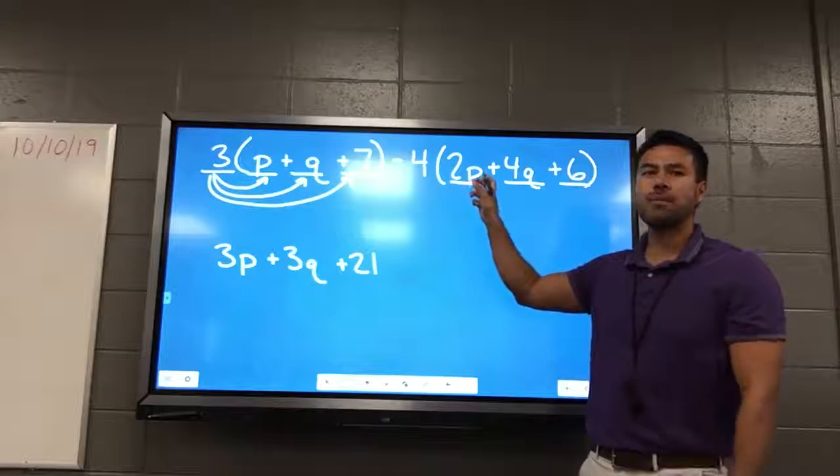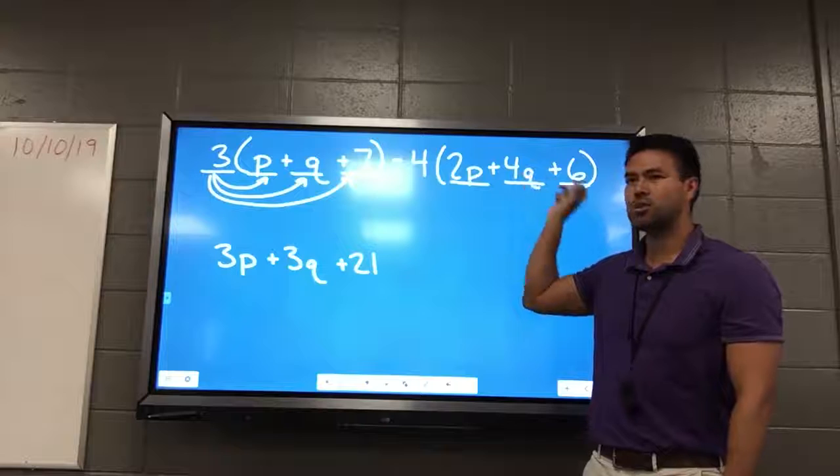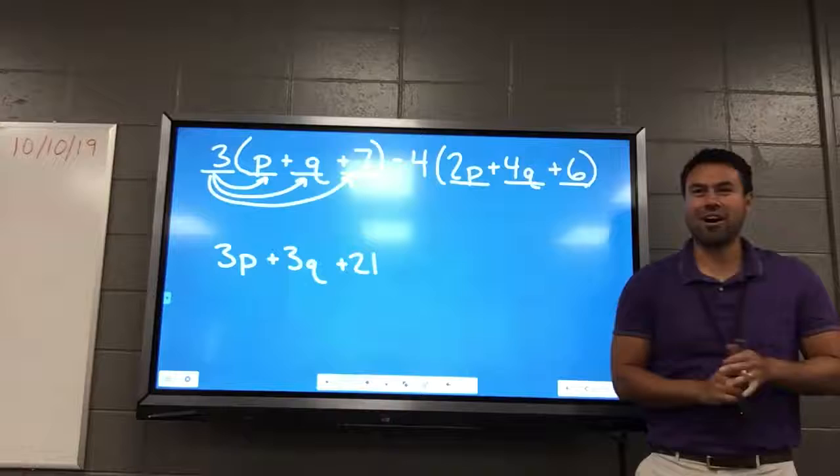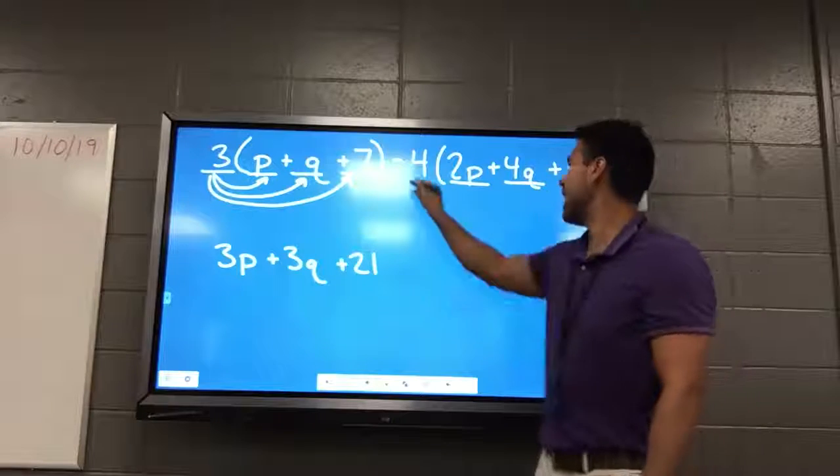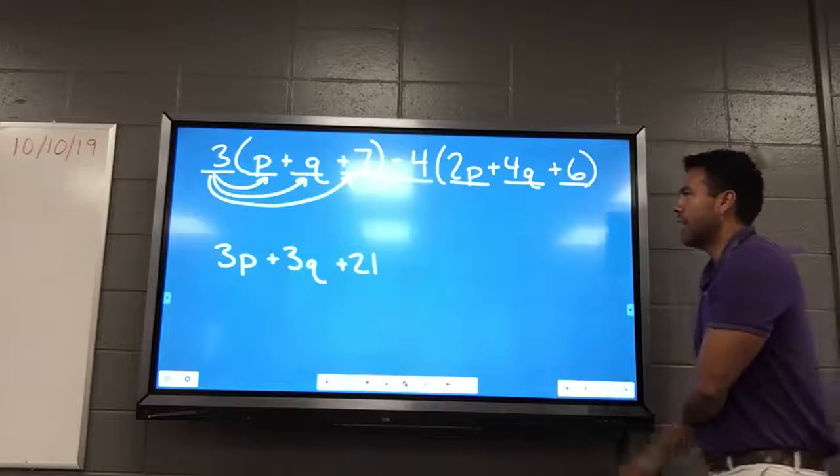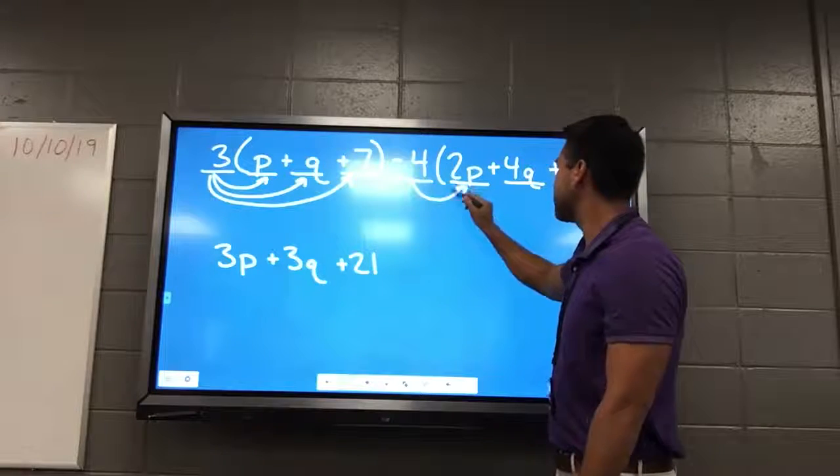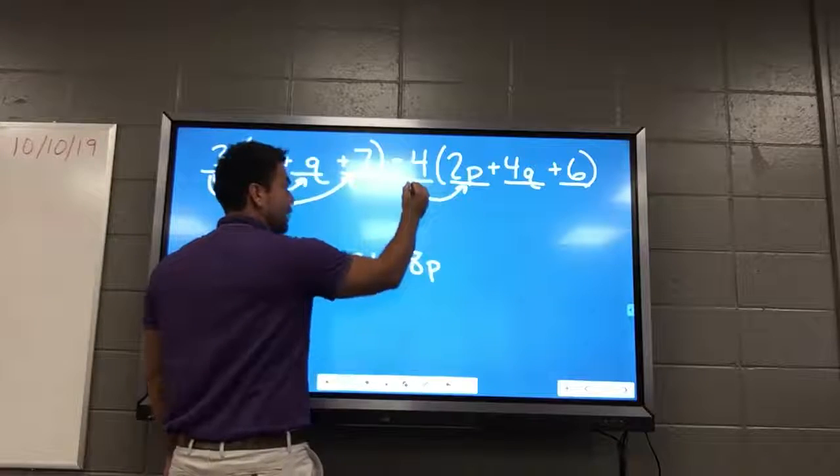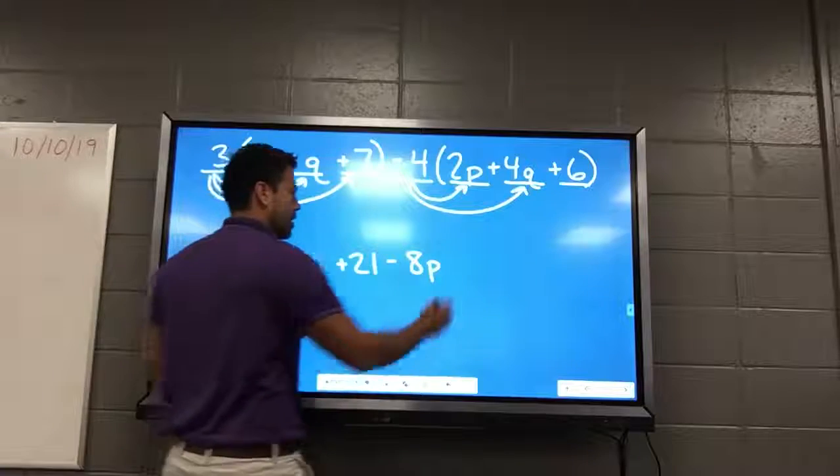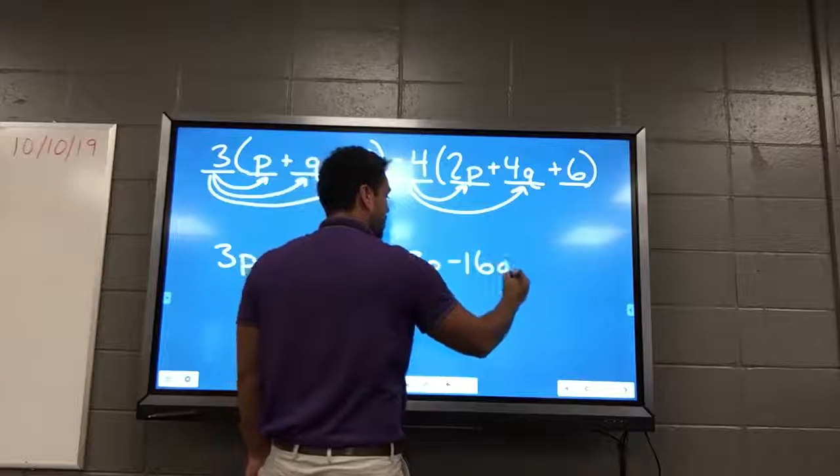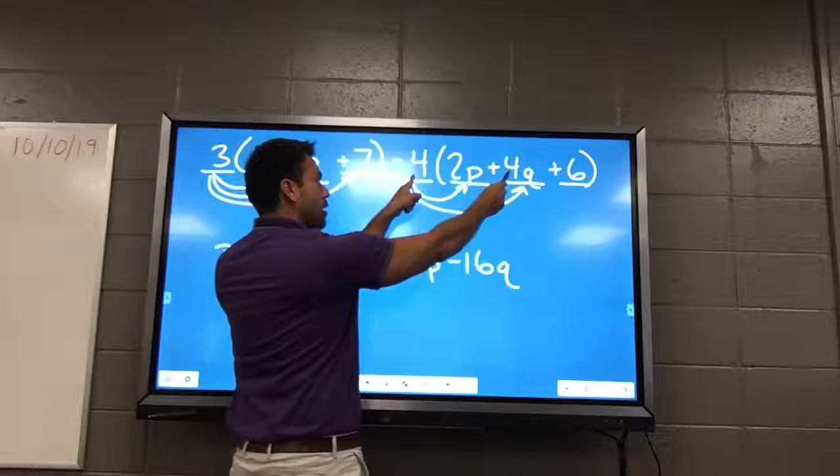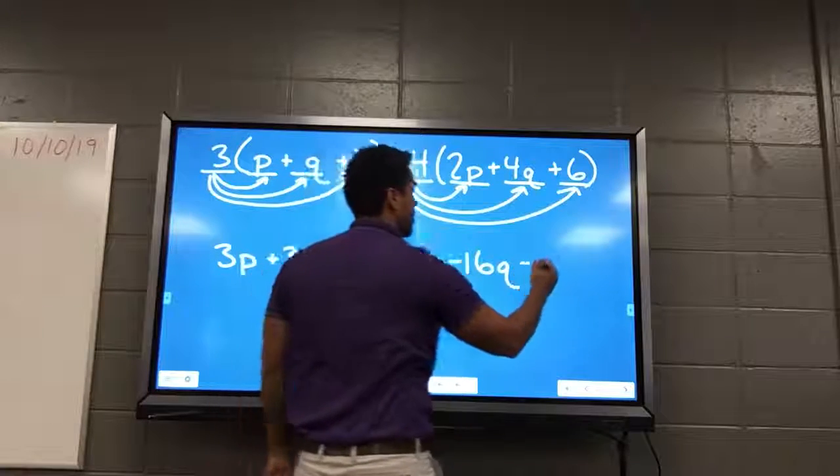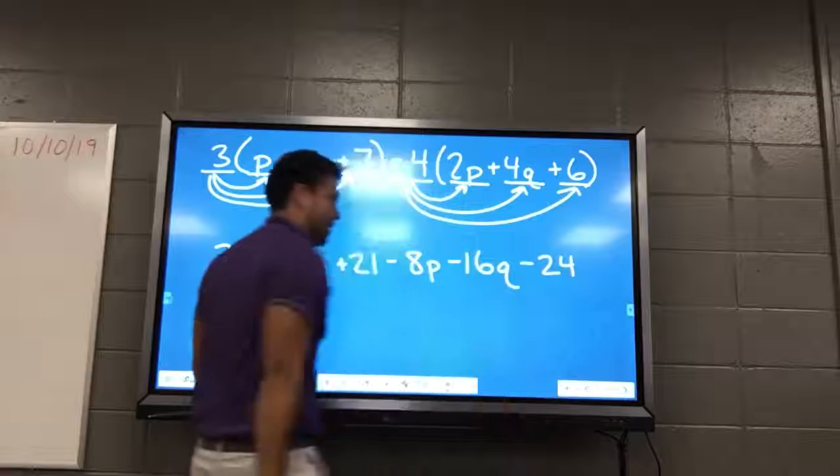So does anyone want to tell me what I multiply these three terms by? Be very careful. Be very, very careful. Call it. Negative 4. Negative 4. Very good. All right. What's negative 4 times positive 2p? Negative 8p. Negative 8p. Good. What's negative 4? Times positive 4q. Negative 16q. Negative 16q. And guys, you understand this is negative 4 times 4 with the q.